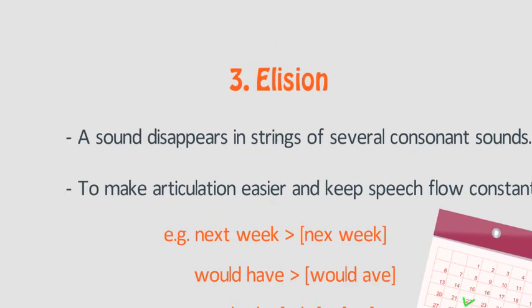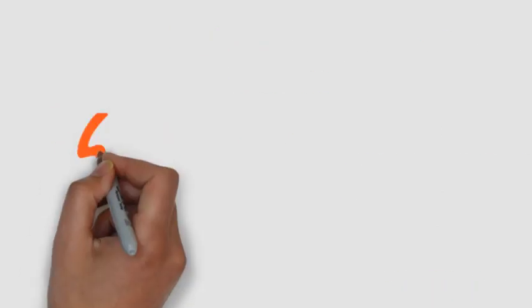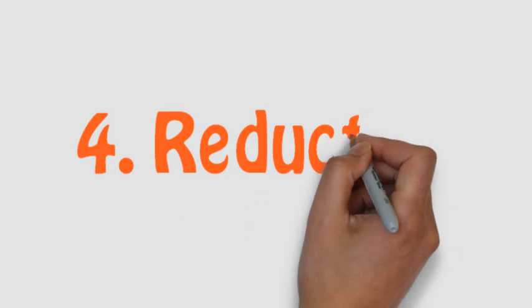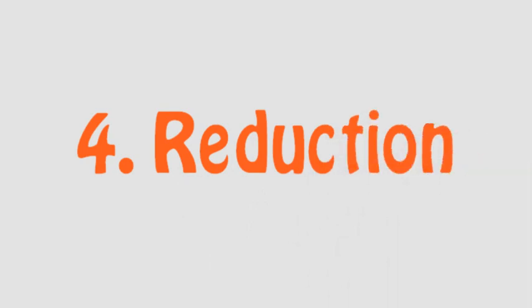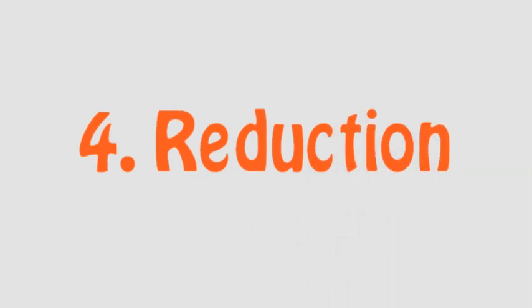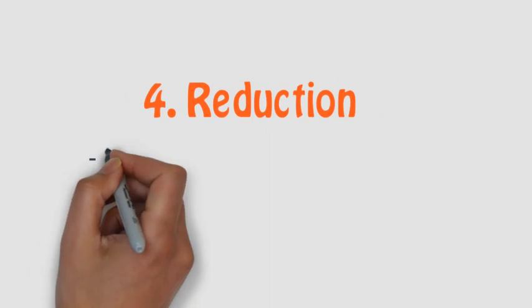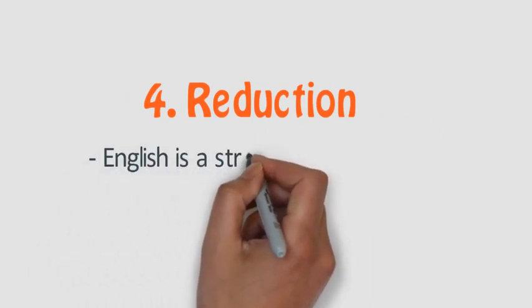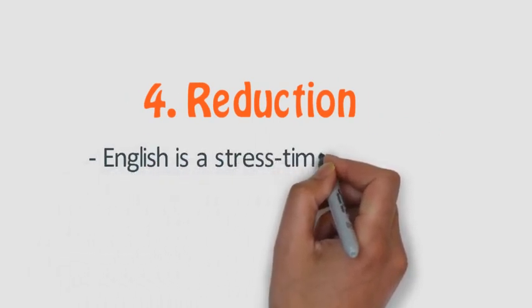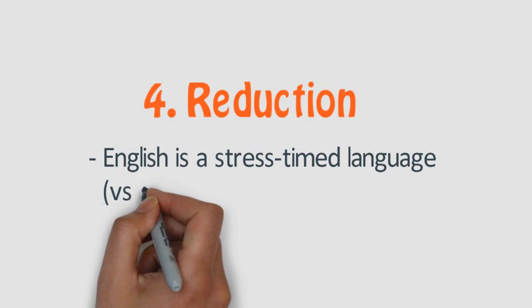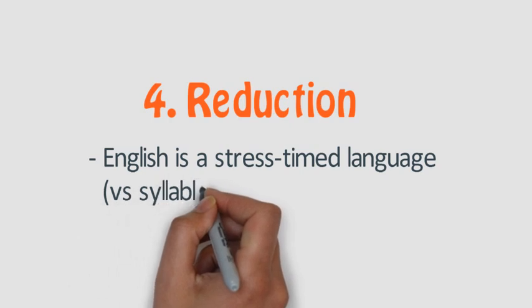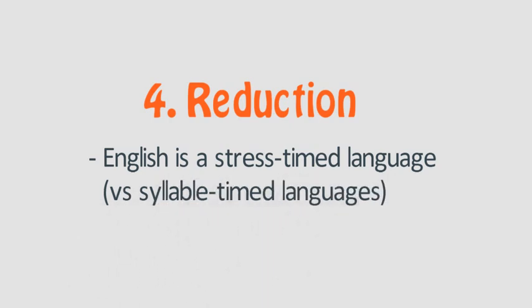The last of the four features is reduction. But before getting into this, let's clarify some concepts about rhythm. In languages, there are syllable-timed languages and stress-timed languages. If a language is syllable-timed, it means that it takes approximately equal amount of time to pronounce all its syllables — this is the case of Spanish or French.